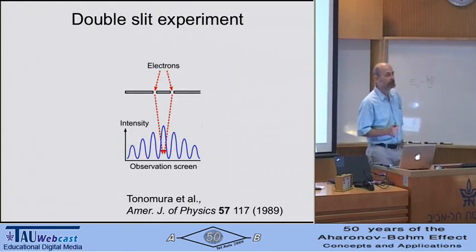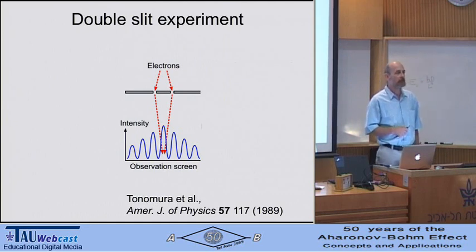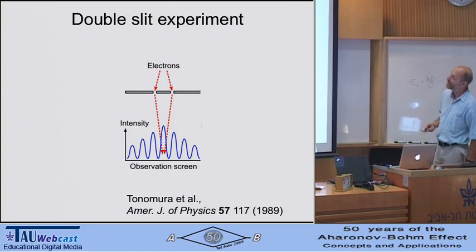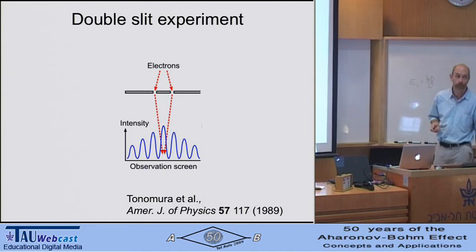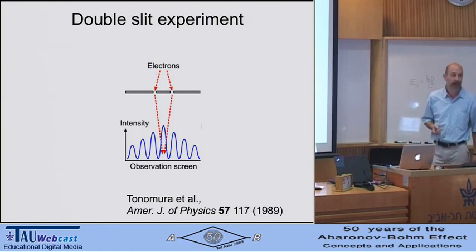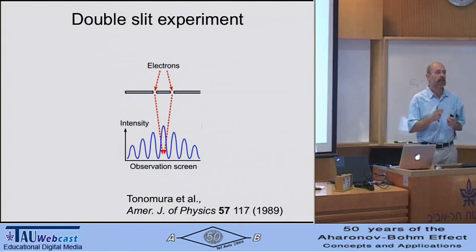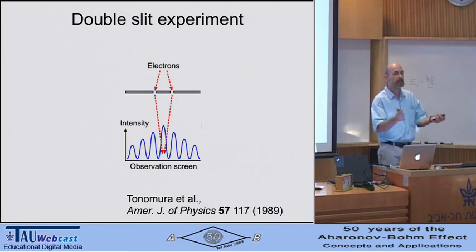Let me change gear and tell you about time-resolved experiments—in the sense that we can really monitor individual electrons as they pass through nanostructures. I want to start with a pioneering experiment by Tonomura and company. They used electrons in an electron microscope and diluted the electron beam so that an electron left the source, passed through a double slit, and landed on the screen before the next electron was released—ensuring only one electron was in the system at a given time, so the electron really interferes with itself.